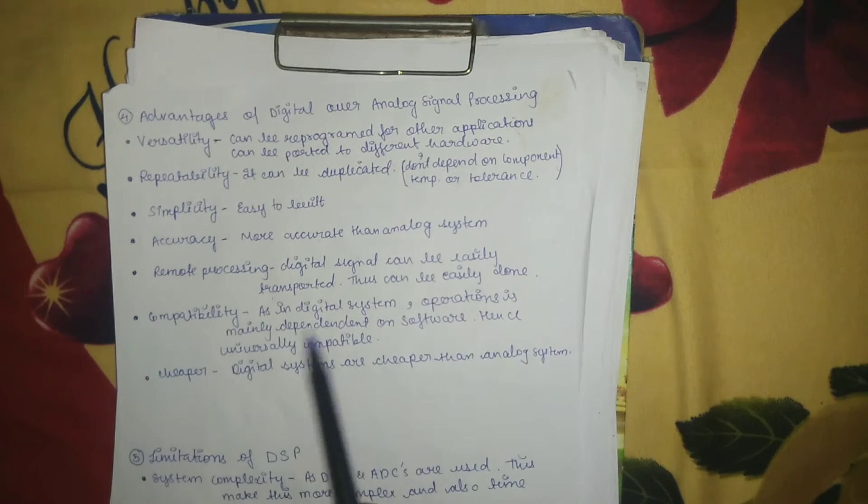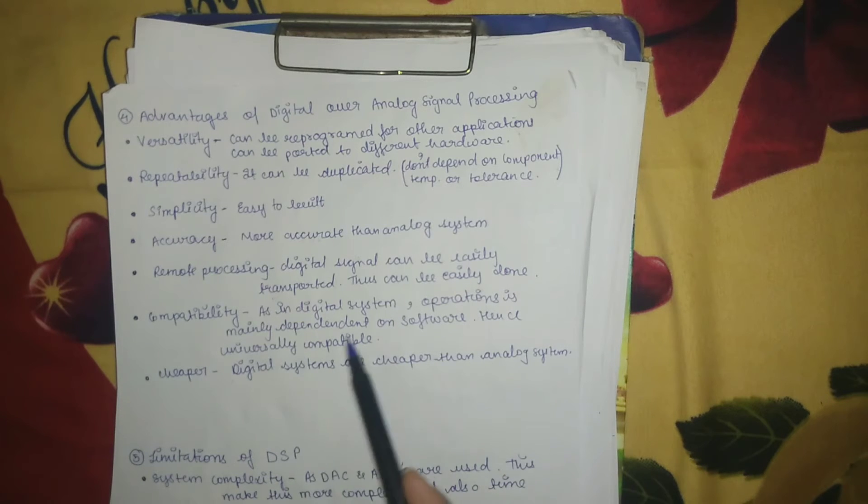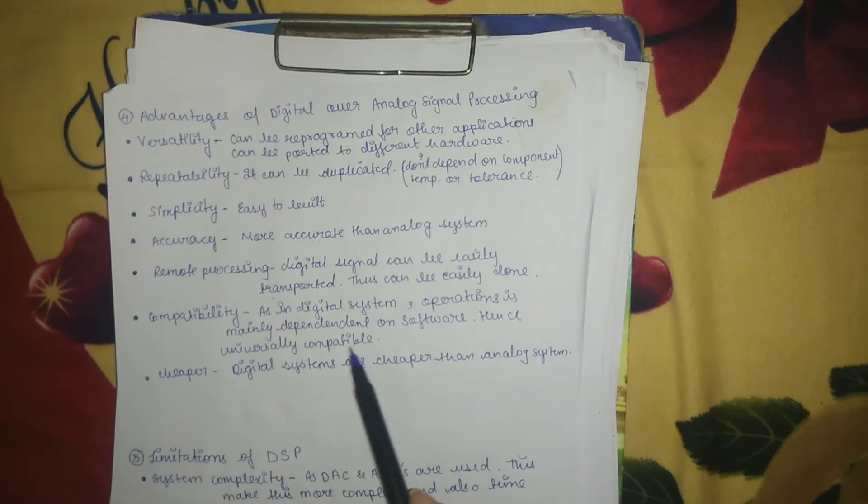Next is compatibility. In a digital system, operation is mainly dependent on the software, and thus it is universally compatible.